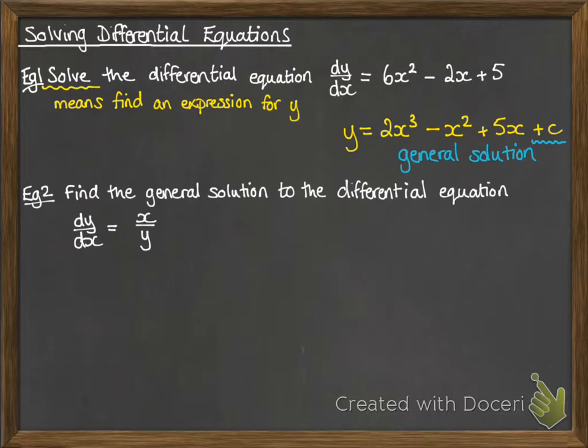So what if we get something like this one? Find the general solution to the differential equation where dy by dx is equal to x over y.